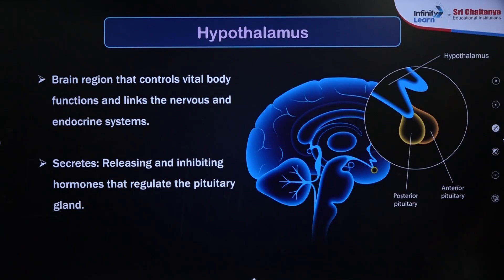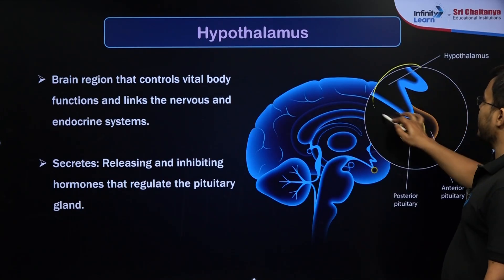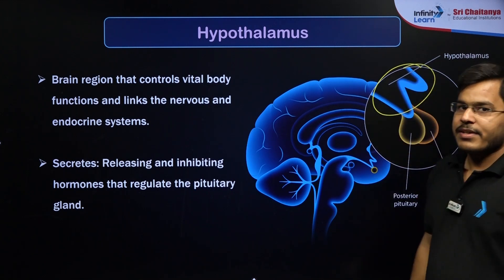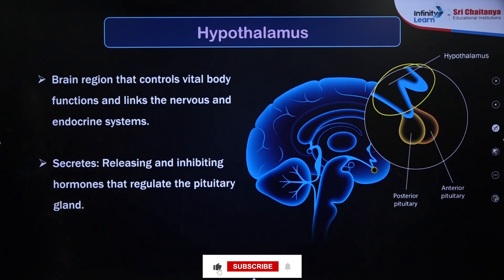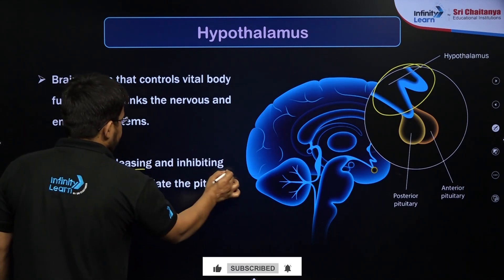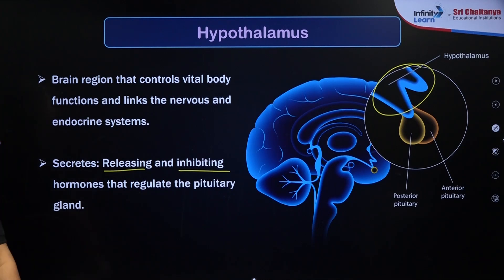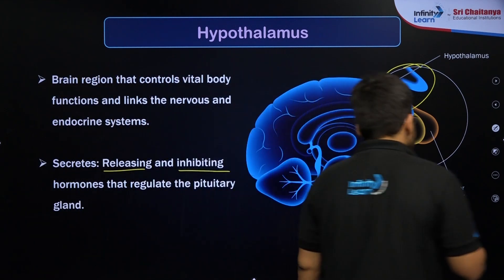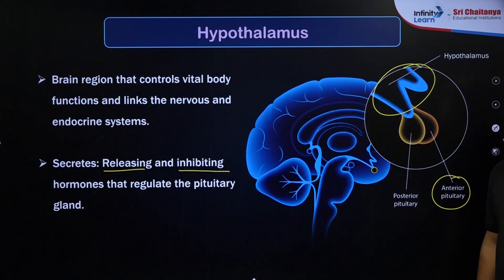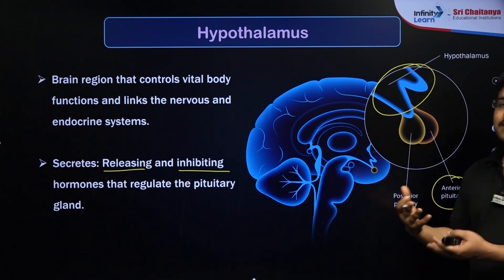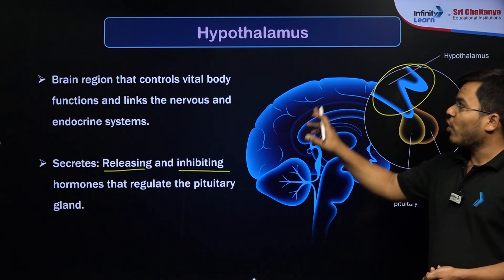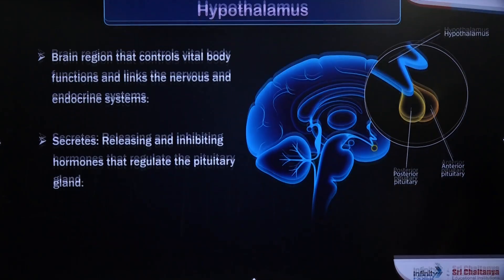The first gland to consider is the hypothalamus, which is part of the brain. It releases certain hormones that control the pituitary gland — the master gland of the body. The hypothalamus releases two types of hormones: releasing hormones and inhibiting hormones. If a releasing hormone is secreted, the anterior pituitary will release that hormone; if an inhibiting hormone is secreted, the anterior pituitary will not secrete those hormones.